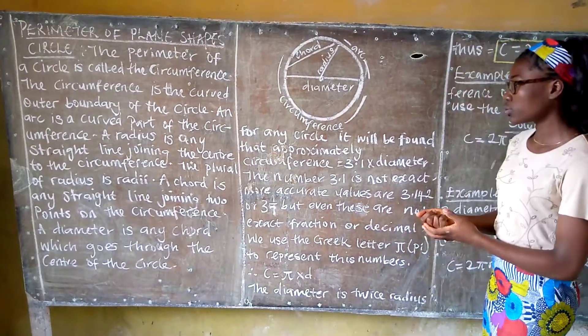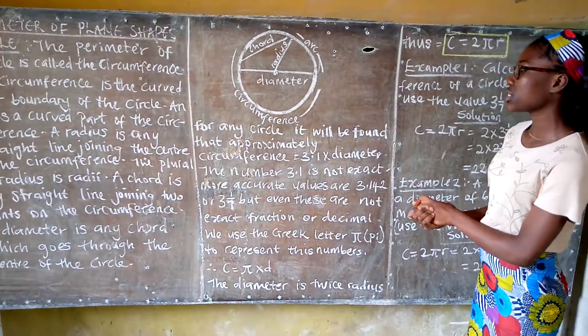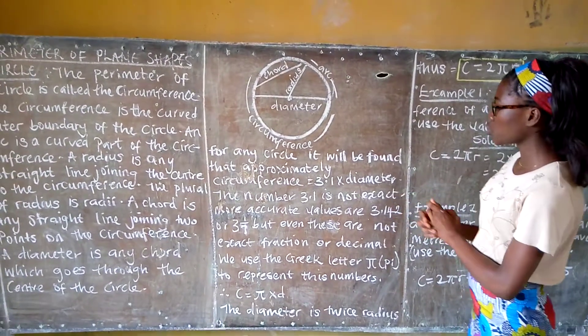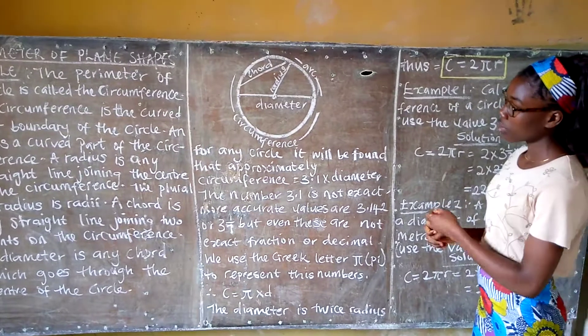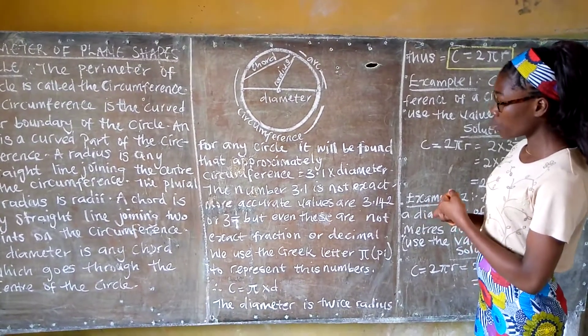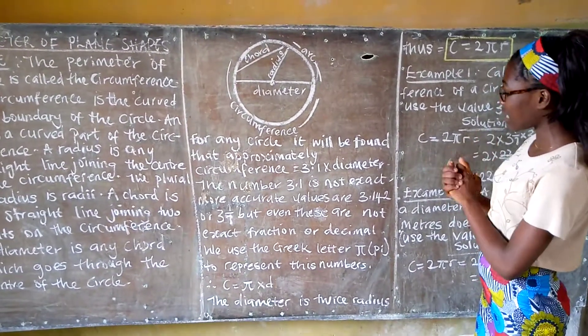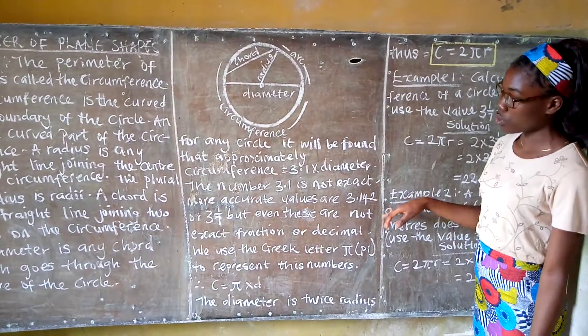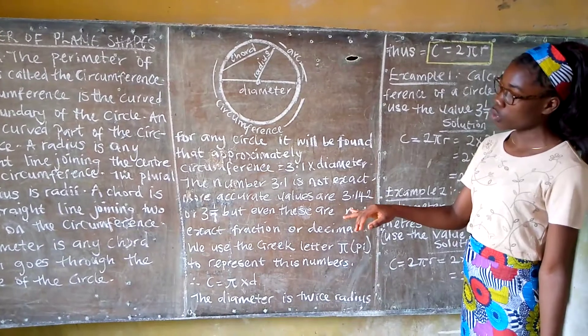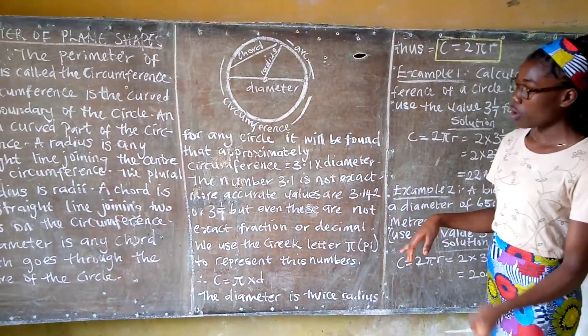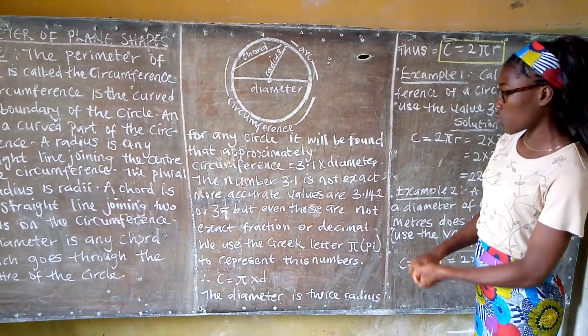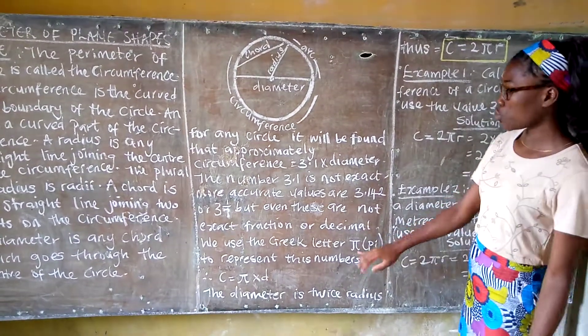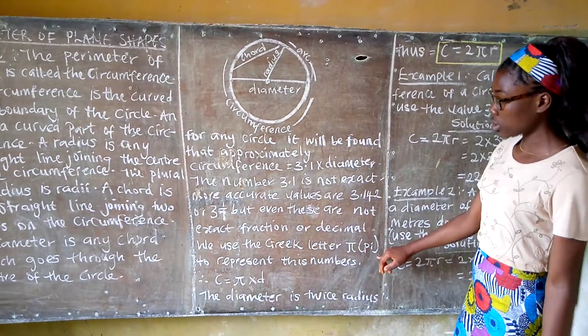Now for any circle, it will be found that approximately circumference equals 3.1 times diameter. The number 3.1 is not exact. More accurate values are 3.142 or 22/7, but even these are not exact fractions. We use the Greek letter π to represent these numbers.